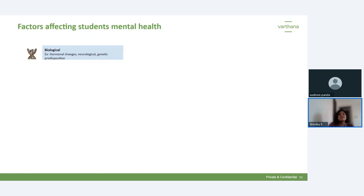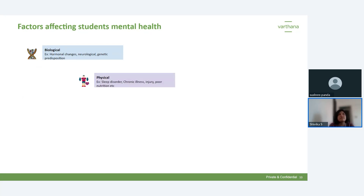Another biological factor is neurological — something in a student's genetics that can be passed down and is outside their control. Physical factors include sleep disorders, chronic illness causing anxiety about falling behind, injuries affecting confidence, and poor nutrition. Our body and brain need proper food, and inadequate nutrition can impact physical health, which in turn impacts mental health.